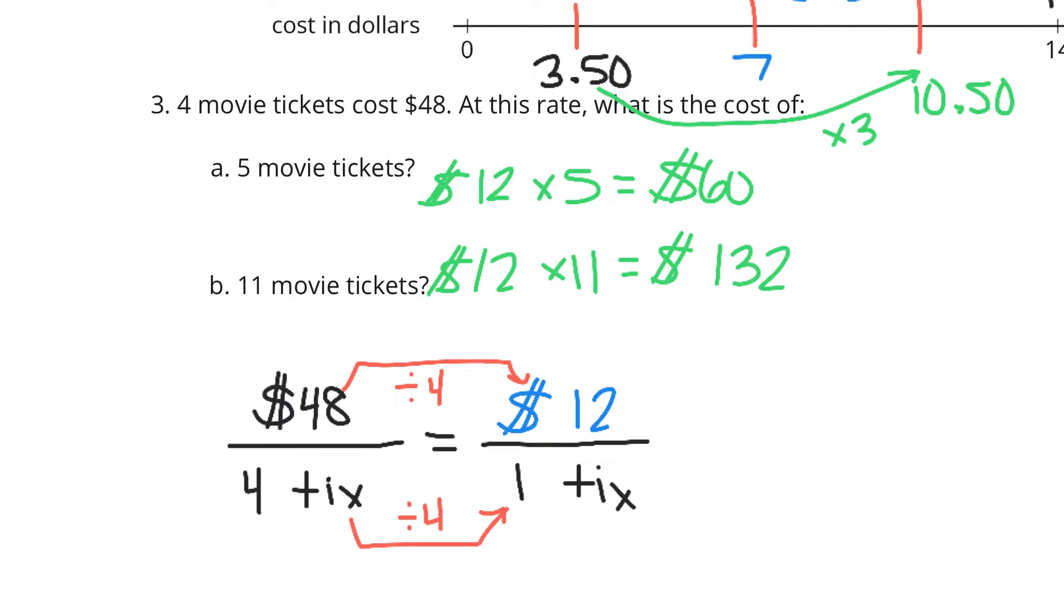I can take that $12 for 1 ticket and multiply by 5 to get $60. So the key here, in order to multiply, is to figure out how much for 1 ticket, the title of our lesson, and then use that how much for 1 idea and multiply. Let's continue on.